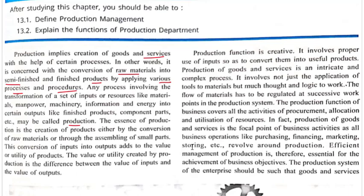The conversion of input into output adds to the value or utility of the product. When we convert raw material into a finished product, that finished product has more value compared to the raw material. So in this process, we are adding value. The value or utility created by production is the difference between the value of input and the value of output.